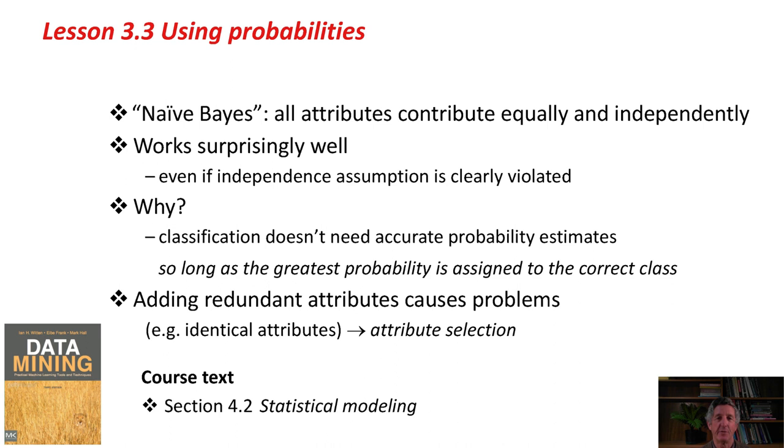This actually means that if you add redundant attributes, you get problems with Naive Bayes. The extreme case of dependence is where two attributes have the same values, identical attributes. That will cause havoc with the Naive Bayes method. However, Weka contains methods for attribute selection to allow you to select a subset of fairly independent attributes, after which you can safely use Naive Bayes. There's quite a bit of stuff on statistical modeling in Section 4.2 of the course text.